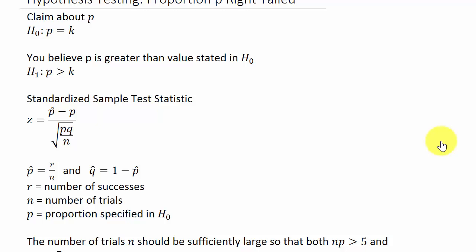We have hypothesis testing here, and this is for a proportion P — it will be a right-tailed test. The claim about P is going to be our null hypothesis. That's your null hypothesis, so P equals some number K, and we believe P is greater than the value stated in the null hypothesis H-naught.